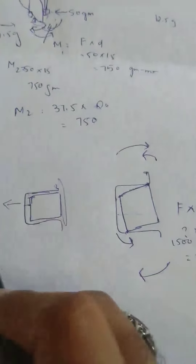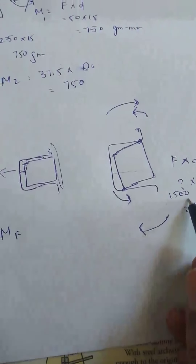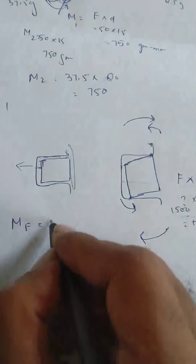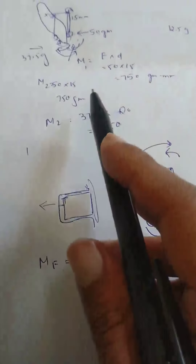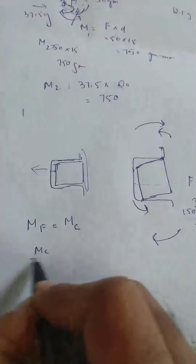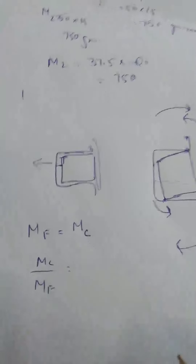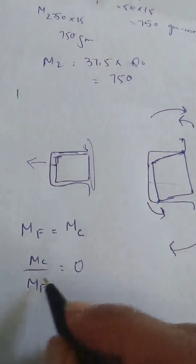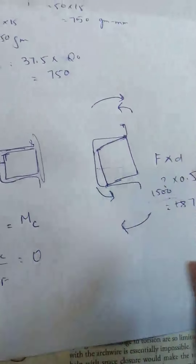The force you first applied is called the moment of force (MF), which was 50 grams producing 750 gram-mm. The counter torque applied is called the moment of couple (MC), which was 750 gram-mm. Now, if we divide MC by MF, there are different values that tell us which movement will occur. When the answer is 0 — meaning you have not given any moment of couple — there will be only tipping forces, so it will be simple tipping.